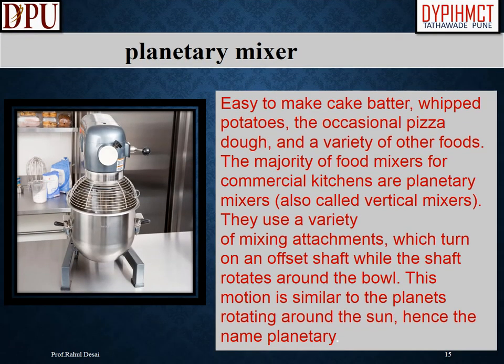A planetary mixer makes it easy to make cake batter, whipped potatoes, pizza dough, and a variety of other foods. The majority of food mixers for commercial kitchens are planetary mixers, also called vertical mixers. They use a variety of mixing attachments which turn on an offset shaft while rotating around the bowl — a motion similar to the planets rotating around the sun, hence the name planetary.